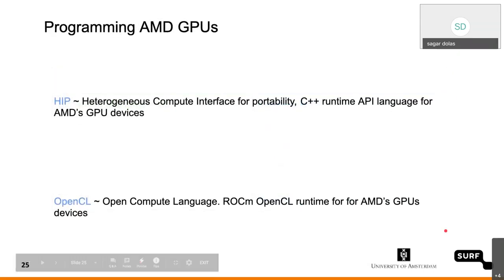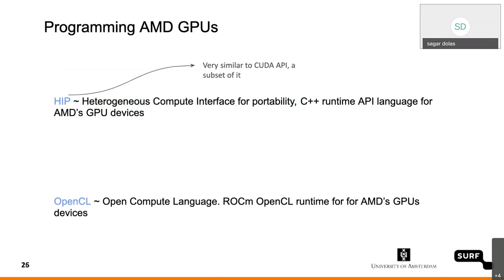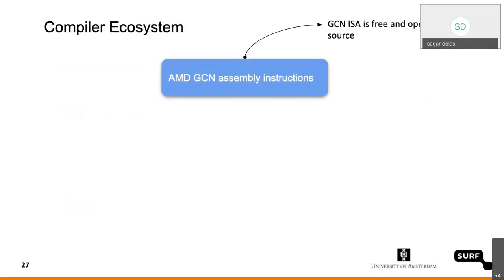The only difference lies in how the compute units are organized. For programming these systems, we have HIP — Heterogeneous Compute Interface for Portability. It's a C++ runtime API, very similar to the CUDA API. It's almost identical and we'll see more when Eric explains it in the next session. You also have OpenCL on the other hand — a very standard interface. ROCm has a special compiler for OpenCL, and then you can compile it on AMD GPU devices.